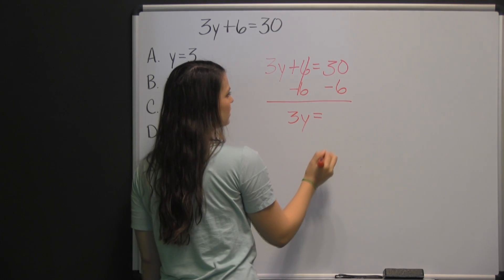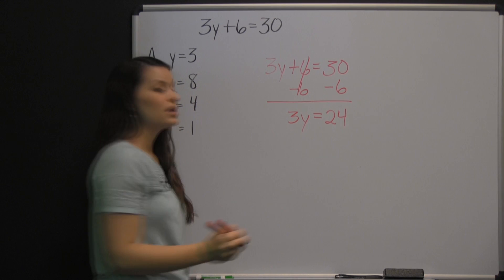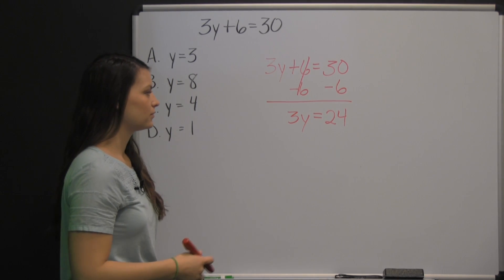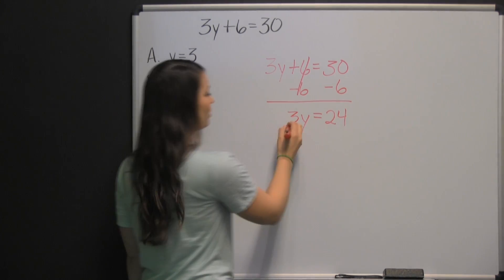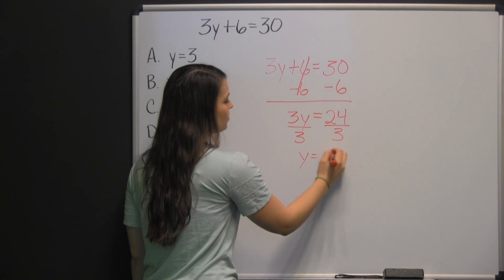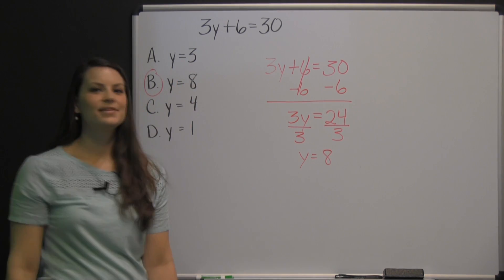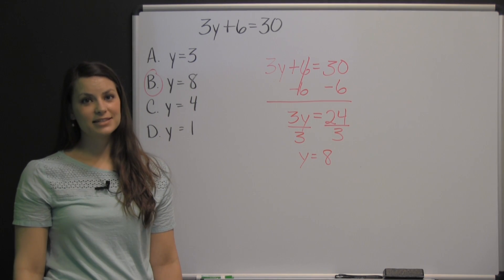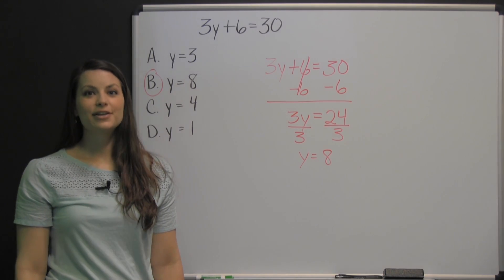We bring down the equal sign, and thirty minus six is twenty-four. Now we just have three times y equals twenty-four. So we undo multiplying y by three by dividing both sides of our equation by three. So y is equal to eight — that's answer B. There you have an example problem from the TABE practice test on the mathematics computation section. Good luck.